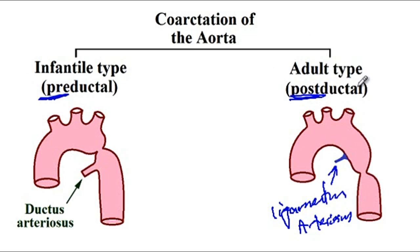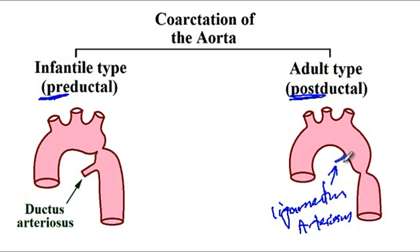Both of these terminologies are arbitrary terms. The reason they are arbitrary is that usually the origin of coarctation is the same, but depending on how the aortic arch grows, the position relative to the ductus arteriosus can change. In the adult form, the coarctation is distal to the ligamentum arteriosus, while in the infantile type, it is proximal to the ductus arteriosus.